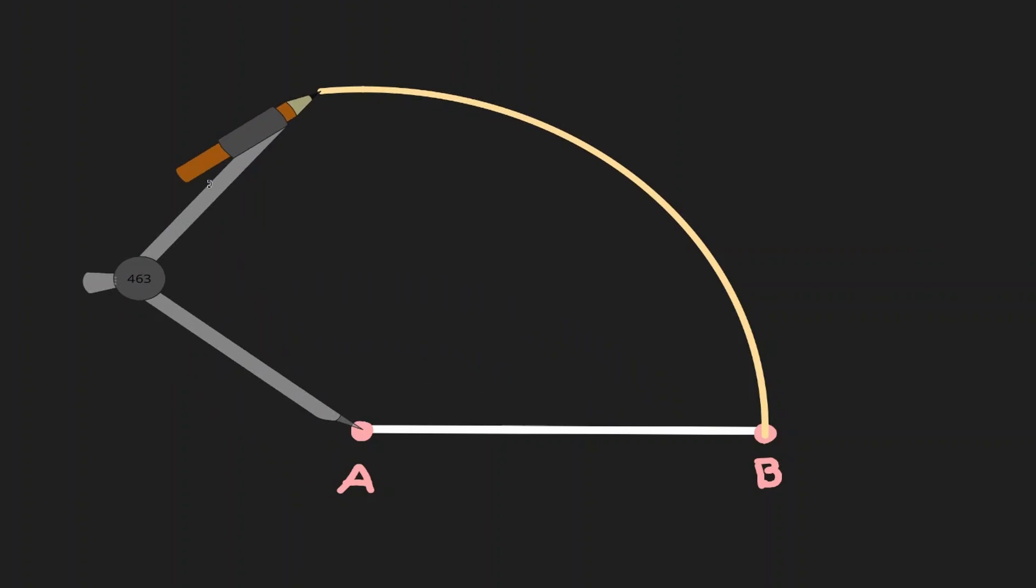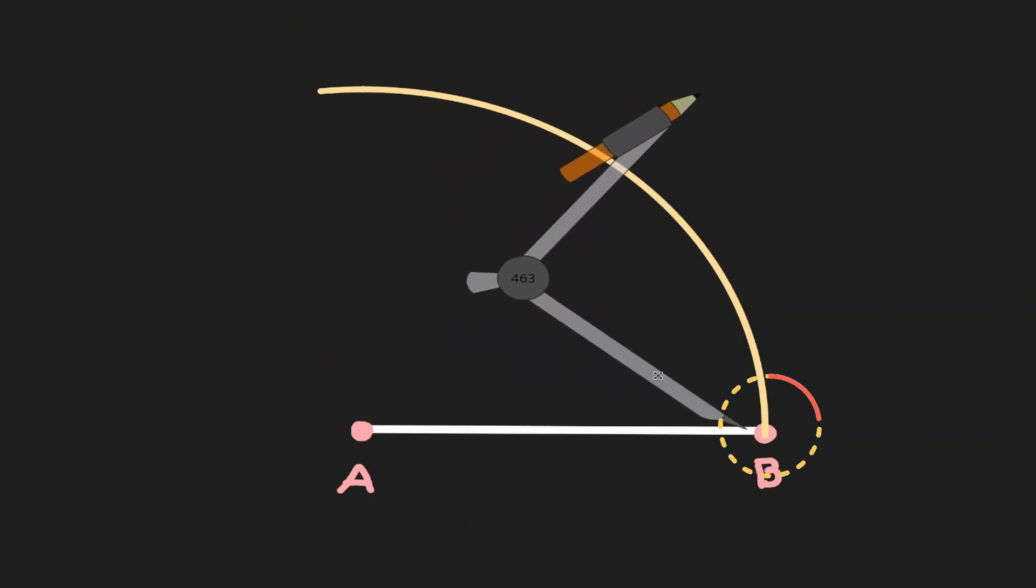Without changing the length of my arc, I'm going to move my compass and place the metal leg on the opposite point, point B. Then I'm going to create an arc going in the opposite direction.